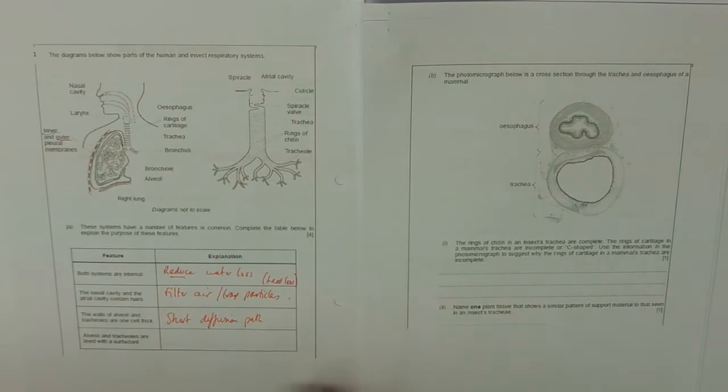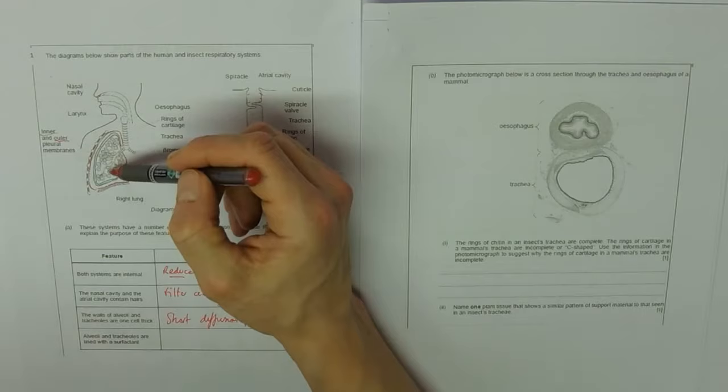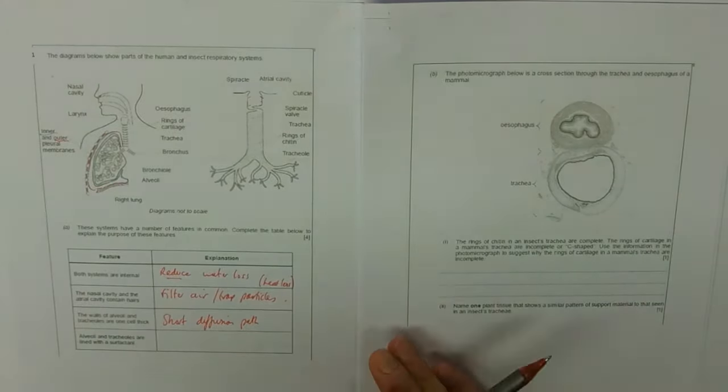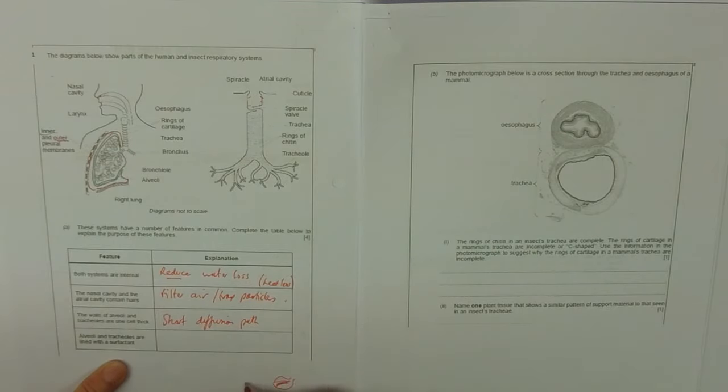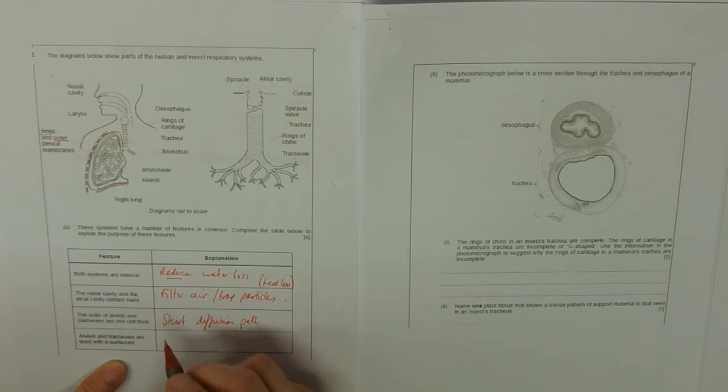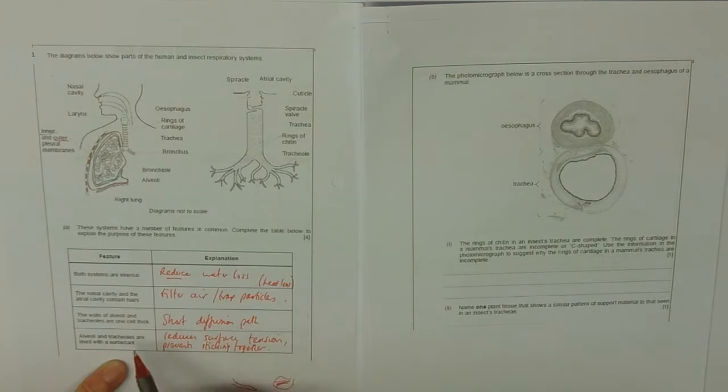Alveoli and tracheals are lined with a surfactant. This is towards the end of the notes, very technical word. What that does is it reduces the surface tension of the liquid on the moist surface and stops the alveoli from the walls collapsing and sticking together. You've got an alveolus there; these two very thin walls would love to stick together in the middle, become very flat, but it prevents that from happening. So it reduces surface tension, prevents sticking together of the alveolar wall.